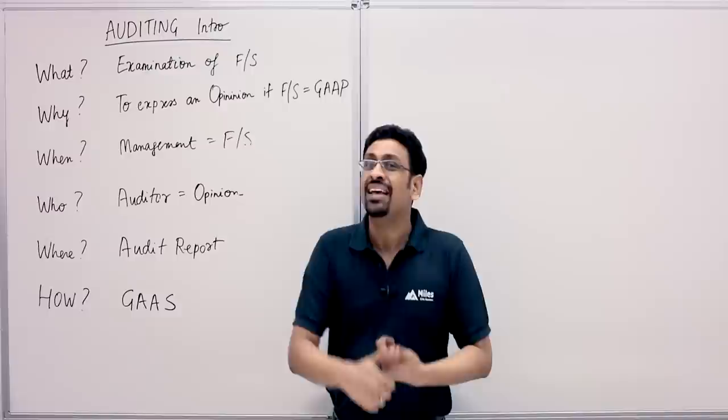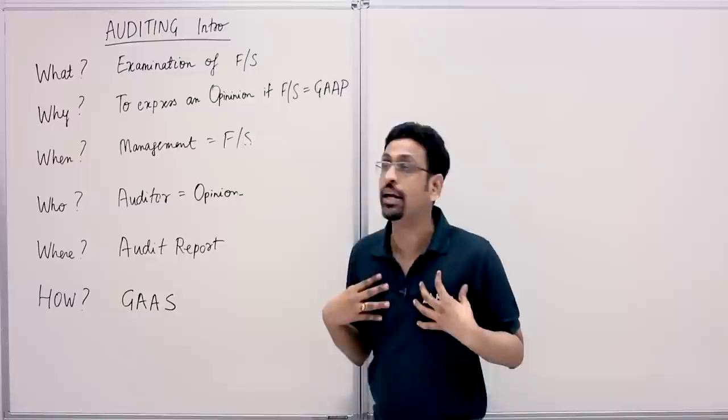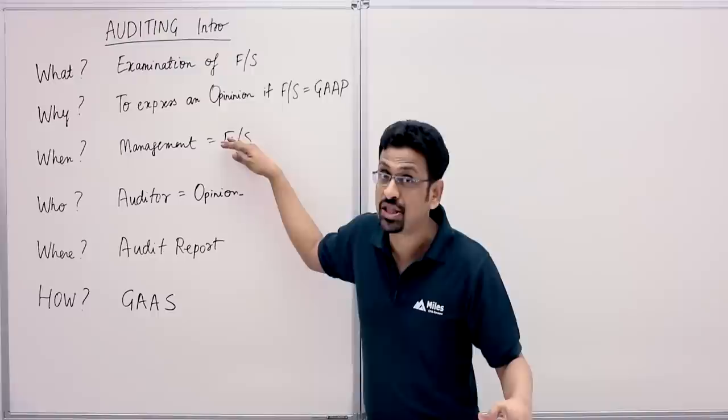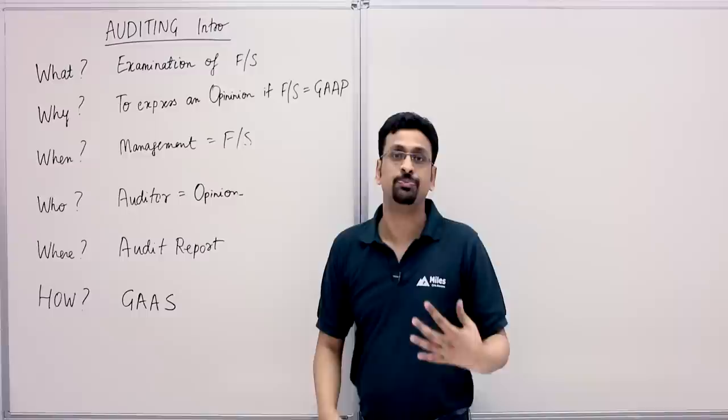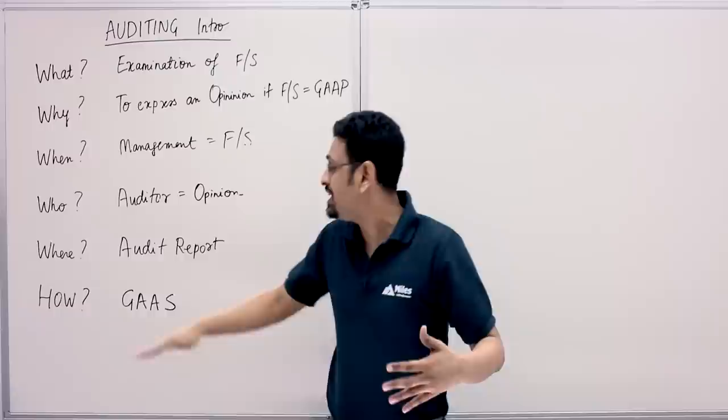To summarize: a clean opinion is unqualified, something fishy is qualified, bad financials get an adverse opinion, and not expressing any opinion is a disclaimer. Management is responsible for the financials; we are only responsible for the opinion we give. Now the big question — how do we do the audit? That's done by performing audit procedures as per GAAS — Generally Accepted Auditing Standards.